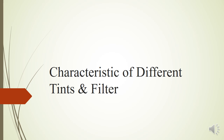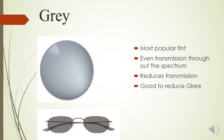Now for the characteristics of different tints and filters. The gray tint is the most common tint seen in prescriptions and dispensing optics. It provides an even transmission throughout the spectrum and does not block any particular wavelength — it simply reduces the total amount of light transmitted. This makes it useful on bright sunny days to reduce glare, though the reduced transmission also slightly reduces vision.